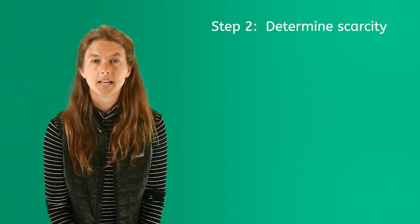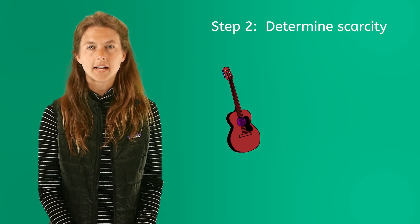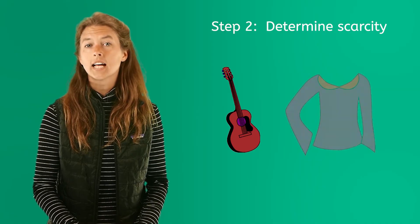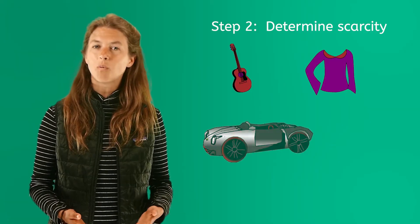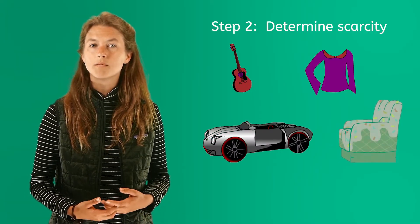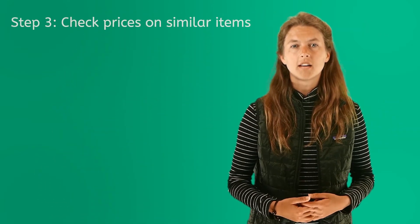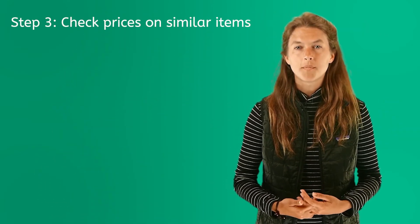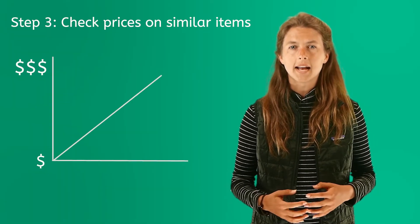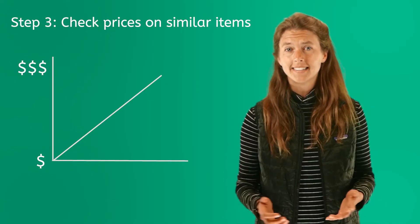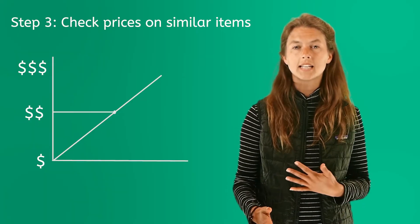Step two: determine scarcity. Look around the marketplace to see if a particular type of item doesn't have a lot of designs, or if no newer designs are being made. What items are selling well? What items could you help make newer designs for? Step three: check prices. Once you know what you're going to make, see what price items are selling for. Some items may be priced high but are not selling. A good target is to set your prices somewhere in the middle of the lowest price and the highest price.